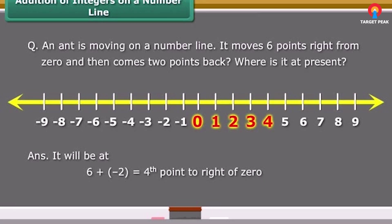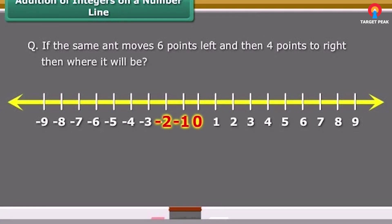If the same ant moves six points left and then four points to the right, then where will it be? It will be at minus six plus four equals minus two, that is second point to left of zero.